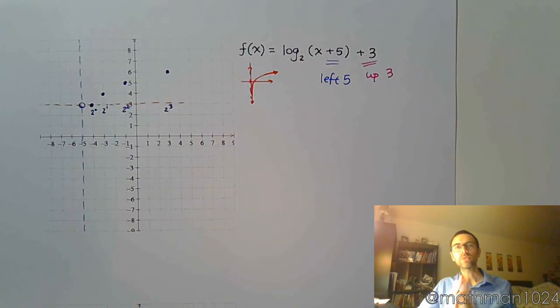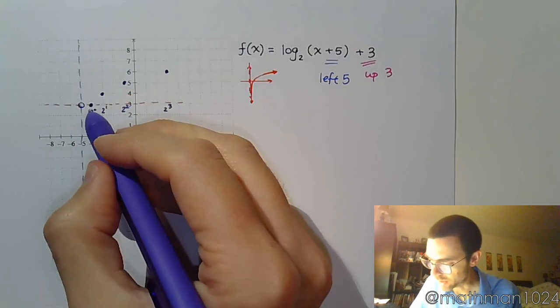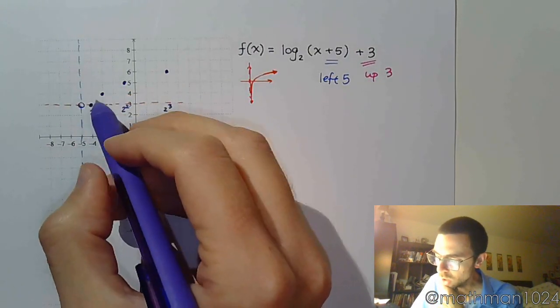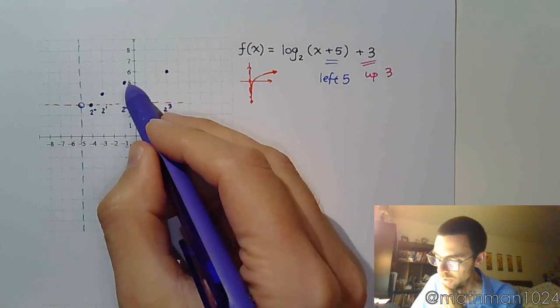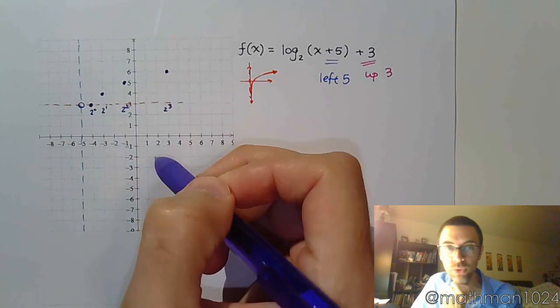Because remember, the answer to the log is the power, which is why we're up 0, we're up 1, we're up 2, we're up 3 units.